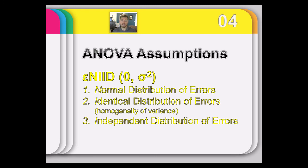In general, statistical tests tend to be fairly robust to violations, but you can change your answers if you violate assumptions and still use the test that requires them. Identicality is often tested with homogeneity of variance — the idea that the variances of the groups are equal. Independent distributions means the errors in one group are not related to errors in another. We want to meet these three requirements: normality, identicality, and independence in the distribution of error terms.